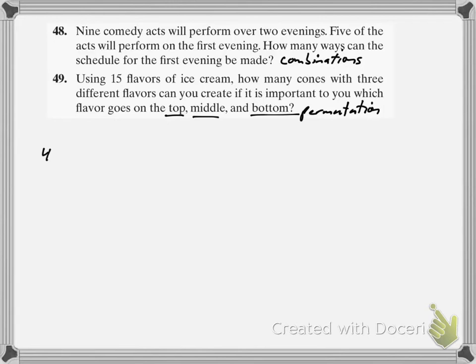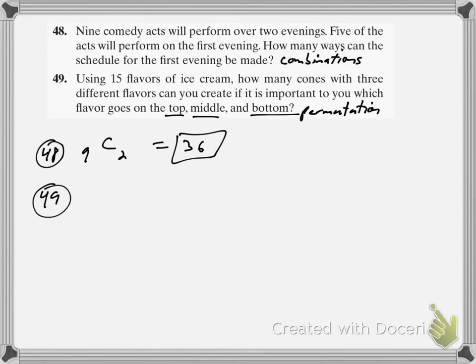So problem 48 is 9C2, which is 36 ways. And for problem 49, this would be 15P3 — put 15 in the calculator, hit math, go to probability, do the nPr, then 3 — and that's 2,730.